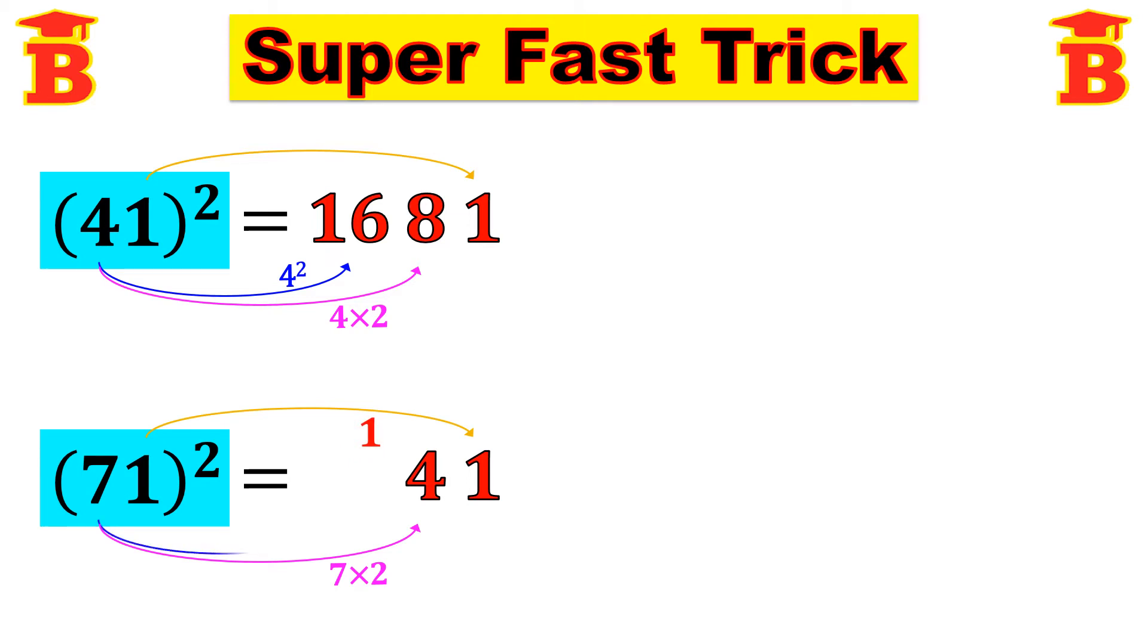Next step, the same number 7, we have to square this. So 7 square is 49. Already we have carry number 1. We have to add this carry number. So 49 plus 1, that is 50. Therefore, 71 square is 5041.